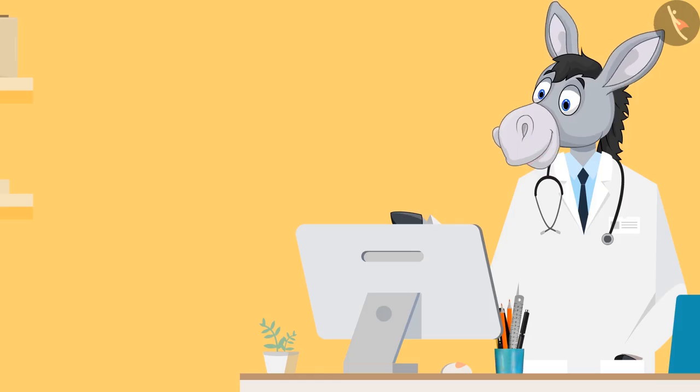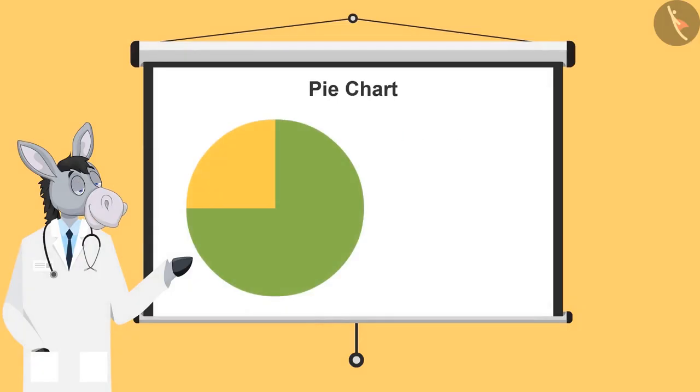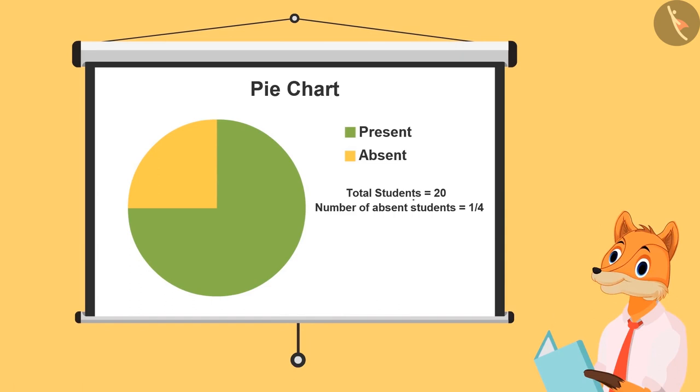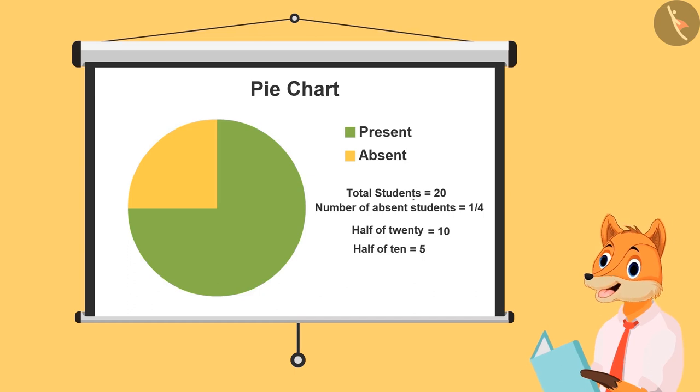Now let's look upon more examples. This pie chart shows how many students came to class today. If total strength of the class is 20, then how many students are absent today? These are the present kids and these are the absent kids. Here we'll find out one-fourth of 20 because absent kids are one-fourth of the total chart. So one-fourth of 20 will be half of 20 is 10 and half of 10 is 5, so total 5 students are absent today.